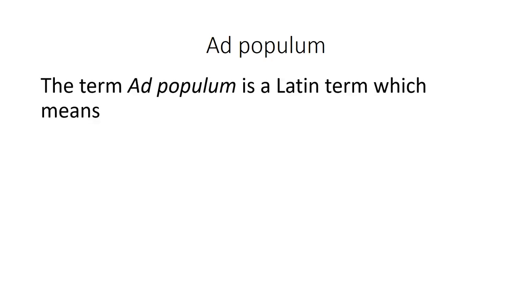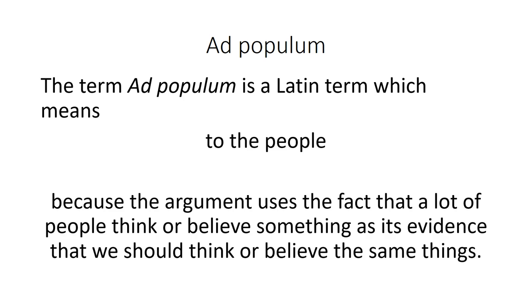Trivia: ad populum is a Latin term which means 'to the people,' because the argument uses the fact that a lot of people think or believe something as evidence that we should think or believe the same things. And again, that's fallacious reasoning — it's not valid, there's no evidence there. Because just because everyone thinks or believes something doesn't mean that we should think or believe it too, and it doesn't mean it's true or right. There has to be evidence to show that it's true or right.